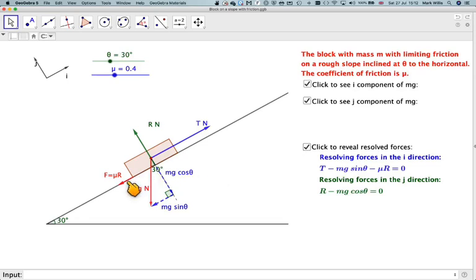minus mu R. And because we're just considering at the point of movement, we're going to put that equal to 0.